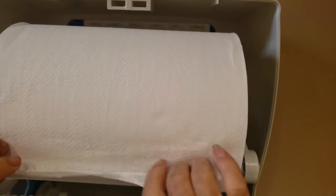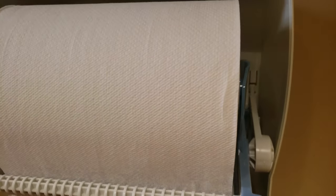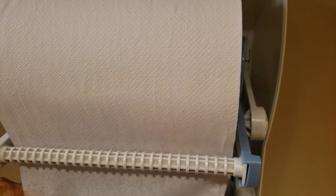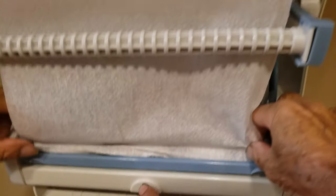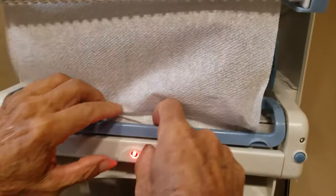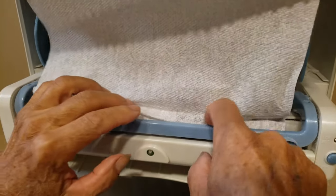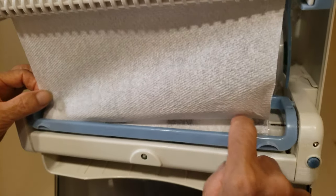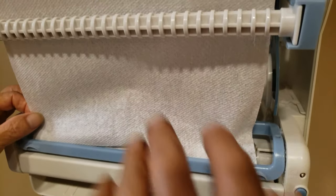Then you want to insert the inside underneath this and insert it into the blue guide right there. When you use the motion sensor, it's going to automatically use the rollers and gears to guide it through.